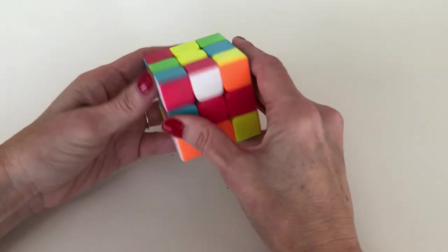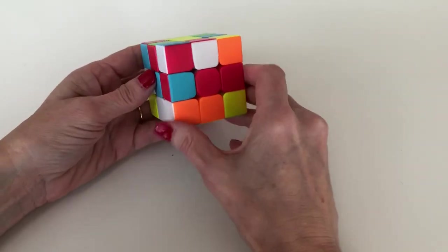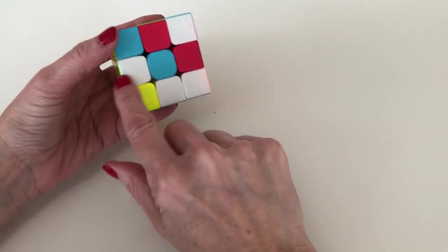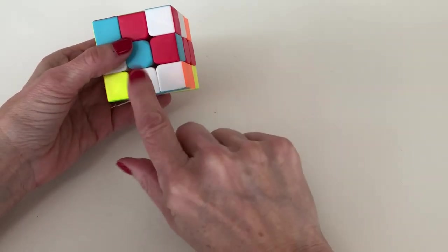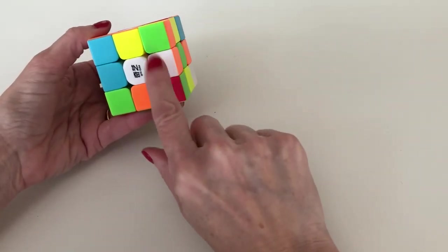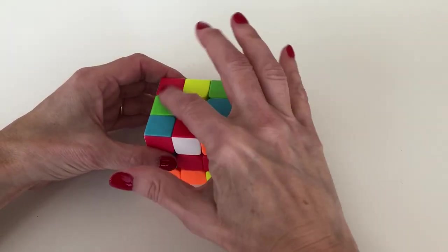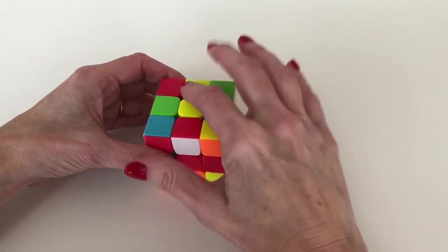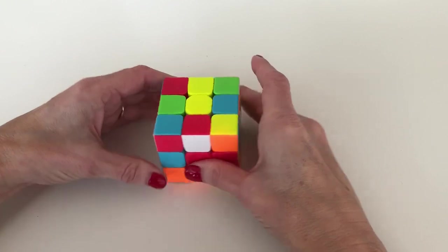You could have an edge piece on the top layer like this, you could have a white edge piece on the middle layer like this one, you could have it on the bottom layer like this one, or you could have it in the underneath position like this one, or it could already be in the top centered around the yellow middle, which is where we're trying to get.